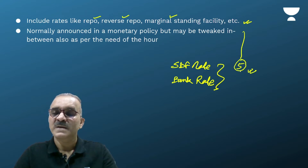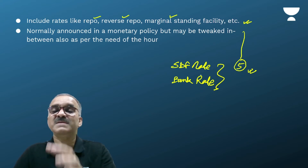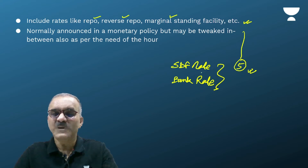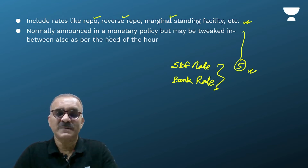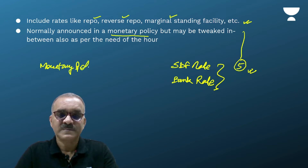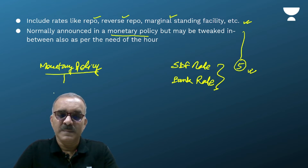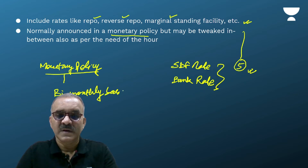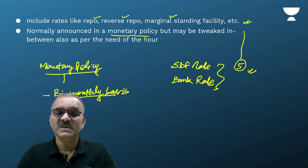Now, when are these rates announced? These rates are normally announced during the announcement of a monetary policy. Since 2016 onwards, monetary policies are announced by RBI on a bi-monthly basis, meaning after every two months one monetary policy is announced.